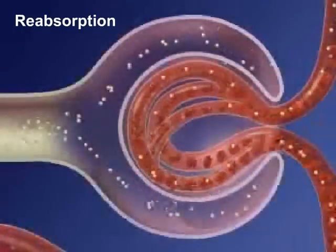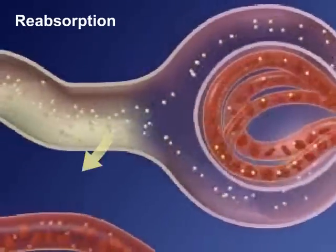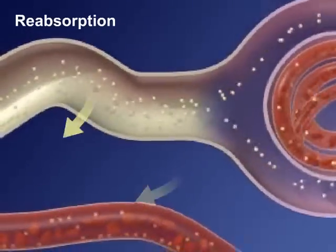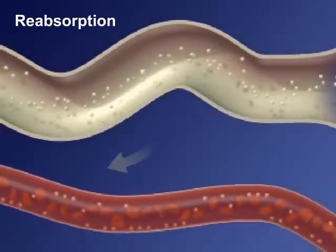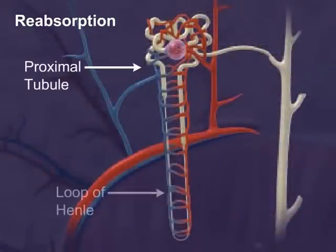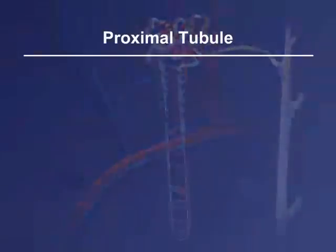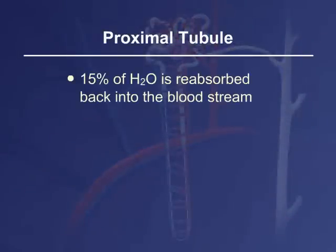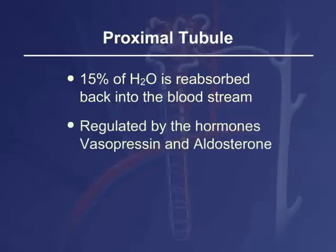In tubular reabsorption, substances are transported out of the tubules and back into the blood of the peritubular capillaries. Reabsorption takes place in the proximal tubule, loop of Henle, and distal tubule. The major part of reabsorption occurs in the proximal tubule. About 15% of water is reabsorbed back into the bloodstream. The process is regulated by the hormones vasopressin and aldosterone.